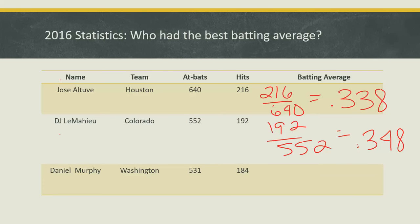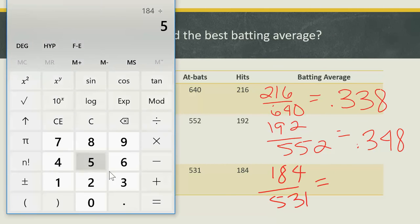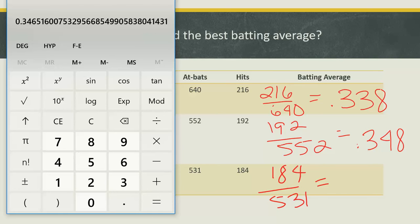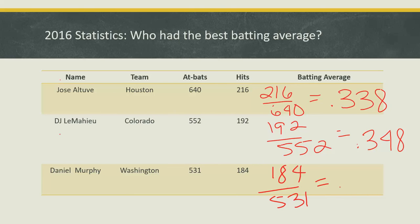Finally, Daniel Murphy of Washington had 531 at bats and got 184 hits. 184 divided by 531 equals 0.3465. We stop at the six, look at the five, and that tells us to round up to 0.347.